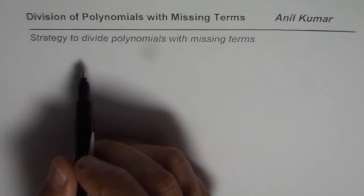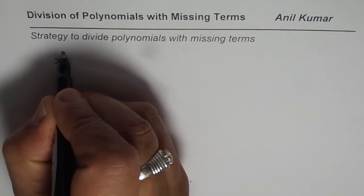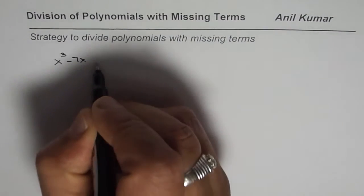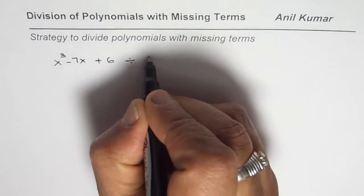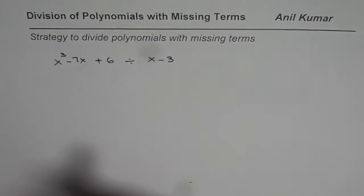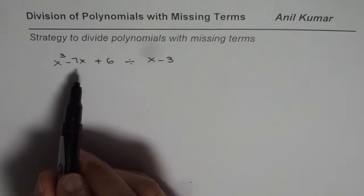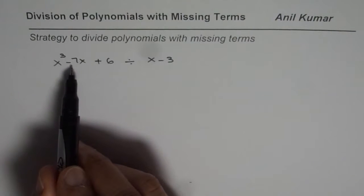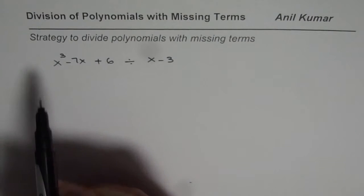Let us say we need to divide x cubed minus 7x plus 6 by x minus 3. That is our question. When you have to do this division, you will note that we have a missing term here. The term x squared is missing. That is why we need some strategy to solve this.